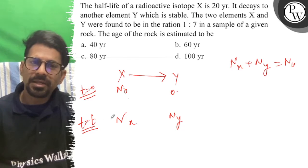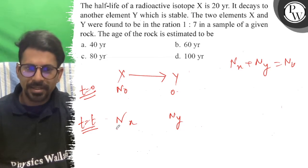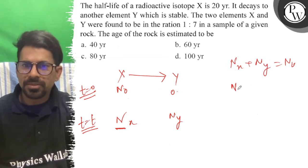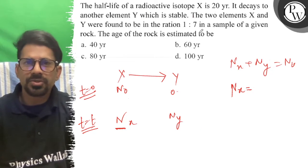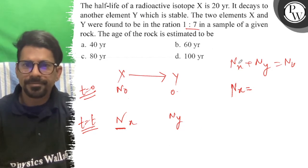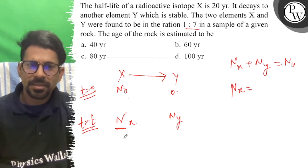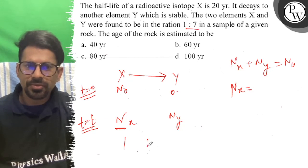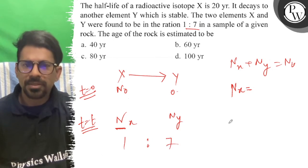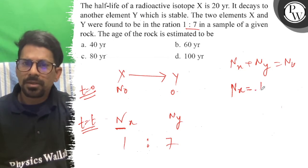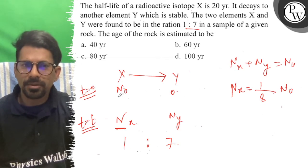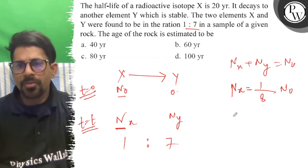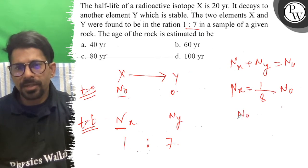So we can see how much Nx is. Since the ratio is 1 is to 7, Nx has a small amount — total being N0 — so Nx is N0 by 8.